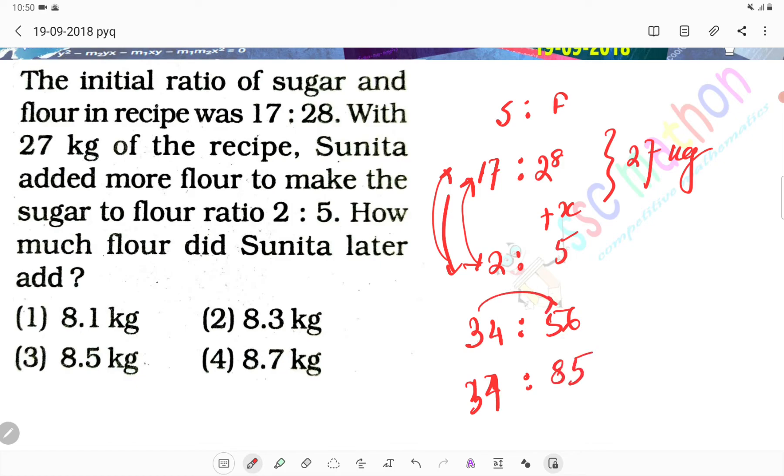If we add total, 5, 3, 8, 6, 10. 90 ratio value is equal to 27 kg. How much flour did Sunita later add? So here the gap is how much? So 6,